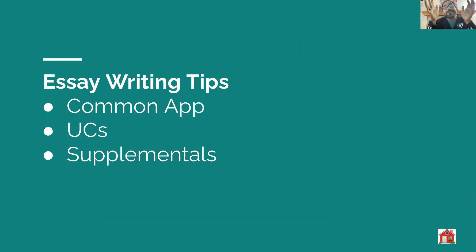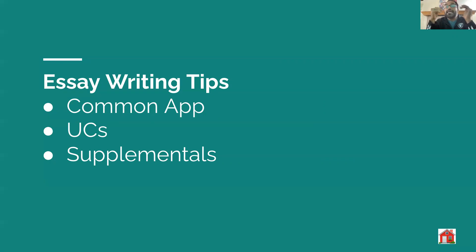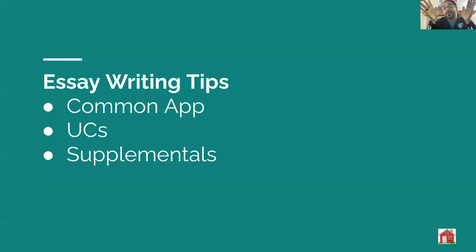Supplementals are school specific. UCs have their own application. Common App is accepted by all schools — most 1,000-plus schools accept Common App — but they will always usually ask for one supplement. Some schools like ASU and smaller or less well-regarded schools will say you don't need to give a supplemental. The most selective schools, like University of Chicago, will make you write like five really complex essays in addition to the Common App.